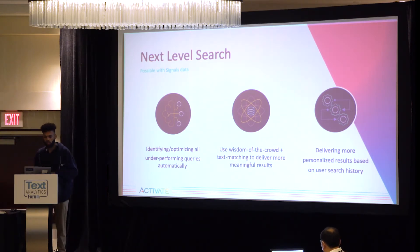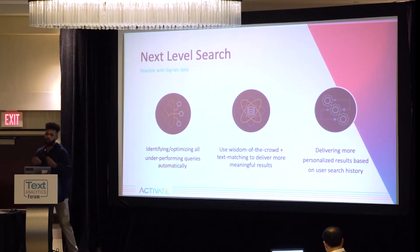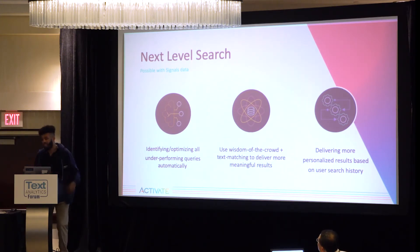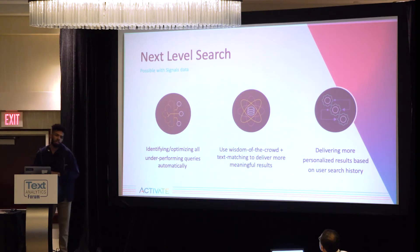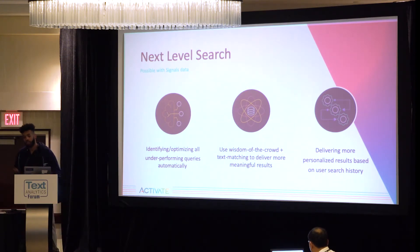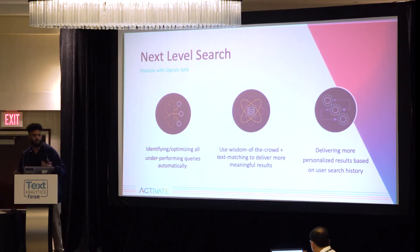The fastest path to next-level search is through signals data. Signals enable us to identify and optimize all the underperforming queries. The Pareto principle applies to search really well — 20% of your queries may result in 80% of the revenue or engagement on your site. But those other underperforming queries still matter. They're probably just fat fingers, typos, misspellings, and it's really incumbent on the search application to surface the data those queries intend to surface.